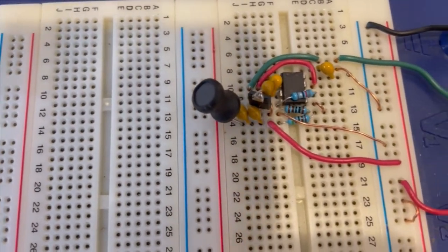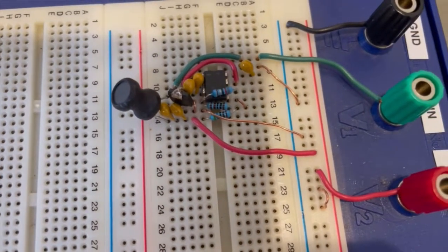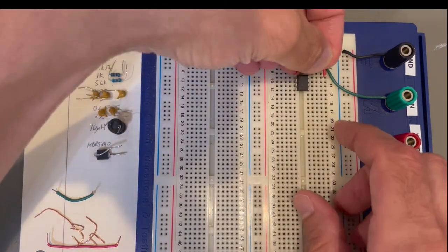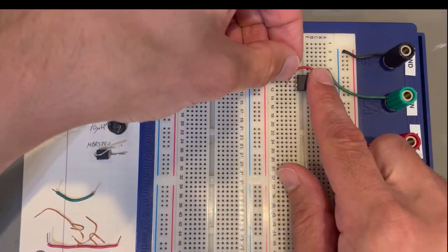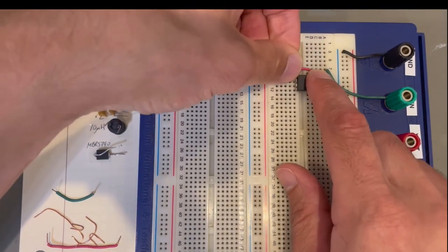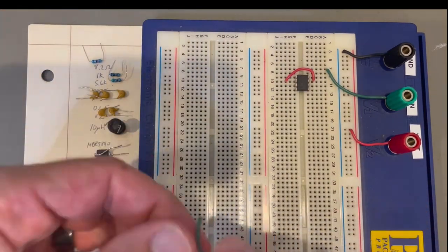You shouldn't be able to breadboard a 3 amp buck converter and have it work correctly, but I found a circuit that does. It works, it's simple, and it's made with some of the cheapest components that I could find. So let's take a look at what you'll need to duplicate this project.